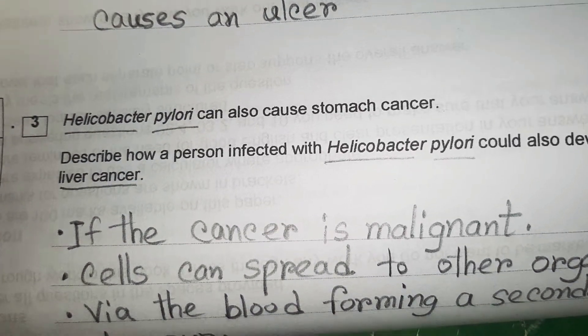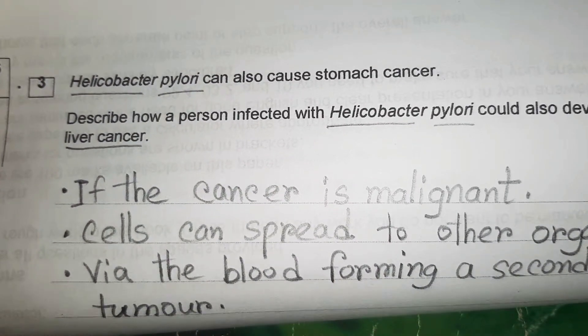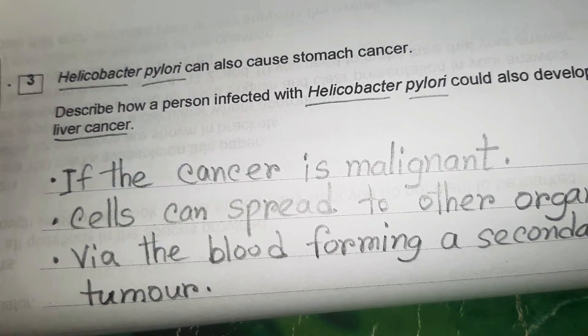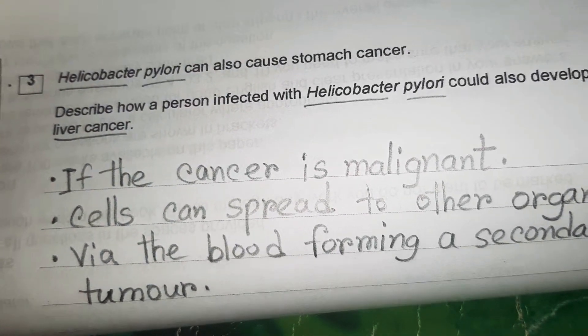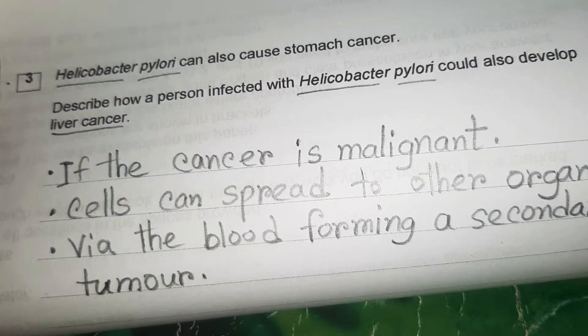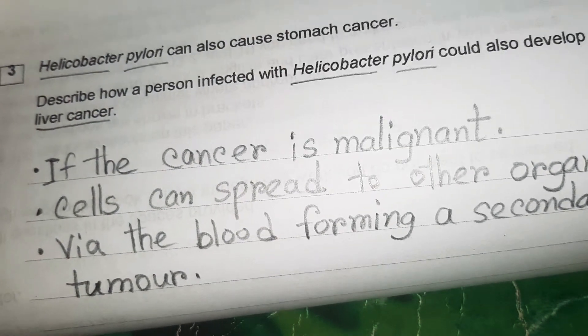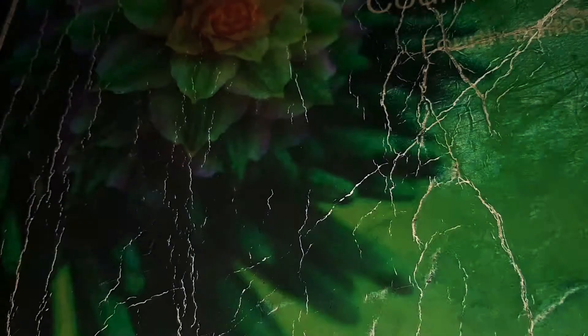Question 6.3: Helicobacter pylori can also cause stomach cancer. Describe how a person infected with Helicobacter pylori could develop liver cancer. If the cancer is malignant, cells can spread to other organs via the blood, forming a secondary tumour.